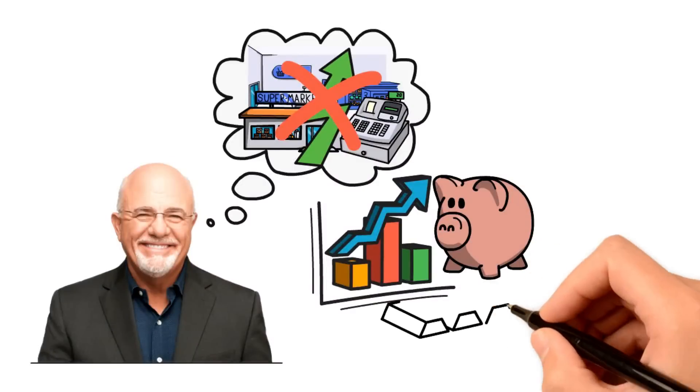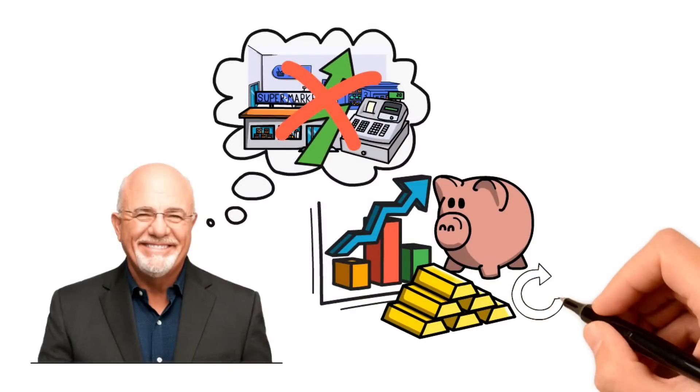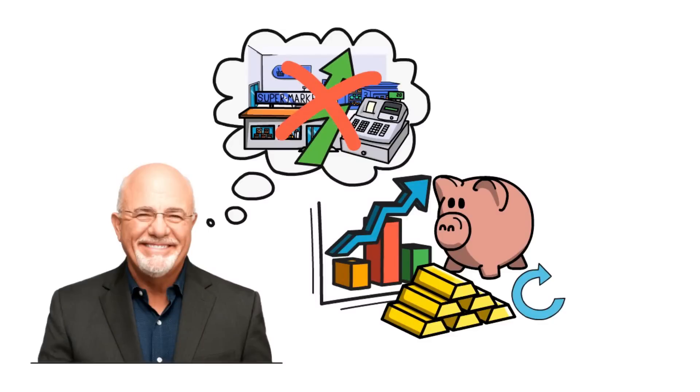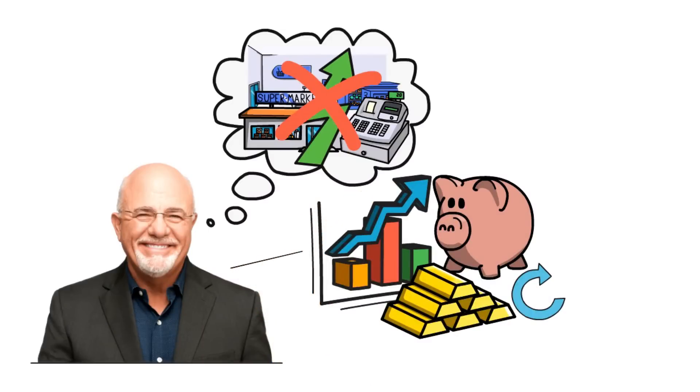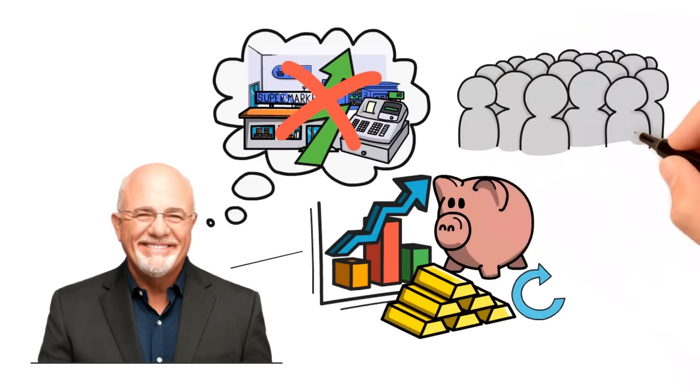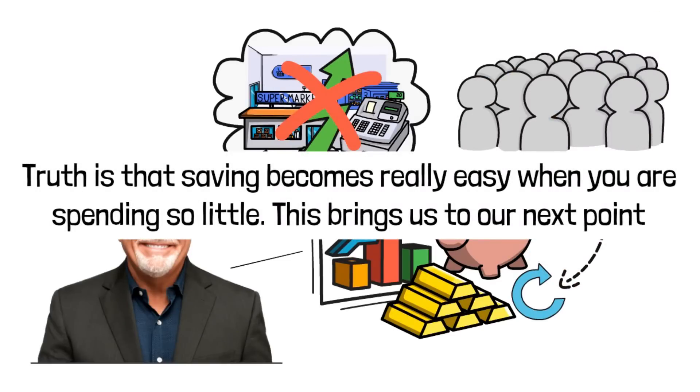All you need to do is have a change of heart and then do it once. Next, repeat the process again and again. And before you know it, your savings would become great enough to cover all of your living expenses. It's what Dave Ramsey did. It's what millions of other successful young men and women out there are doing. And it all starts with you. But the truth is that saving becomes really easy when you are spending so little. This brings us to our next point.